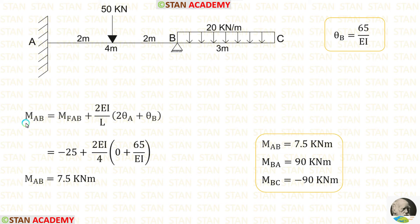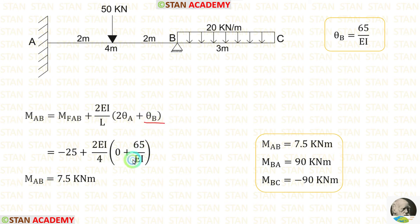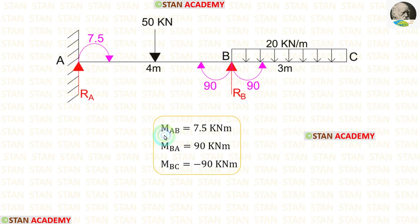Now let us calculate MAB using the slope deflection equation. We apply the fixed end moment already calculated with length AB equal to 4 meters. At point A there is a fixed support, so theta A equals 0. After applying the value of theta B, we get MAB equal to 7.5 kNm. This is a positive value, meaning it acts in the clockwise direction. We had assumed MAB would act anticlockwise, but our assumption was wrong — MAB acts clockwise.